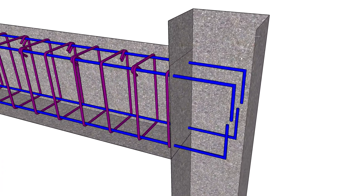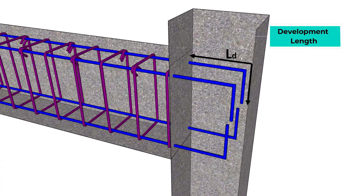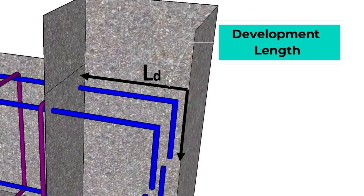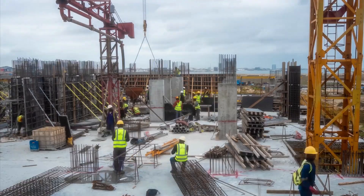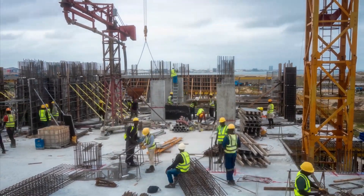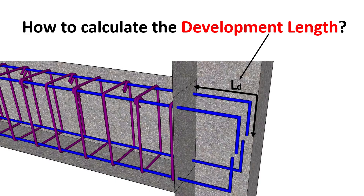Development length is a critical aspect in the design of reinforced concrete members. It's the length of a reinforcement bar or rebar that needs to be embedded or extended into a concrete element. Welcome back to Civil Tutor. Today we are diving into the world of structural engineering as we explore the calculation of development length in reinforced concrete. We will walk through the formula and some examples to make this concept crystal clear.